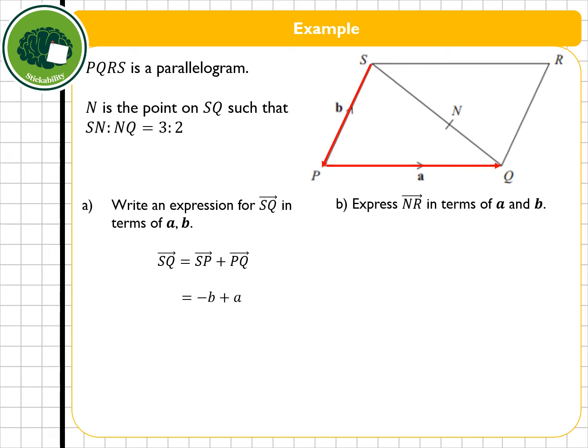Part B, I want to express NR in terms of A and B. Again, similar path. This time SQ is used in part A. So I kind of want to go in that direction. I'm going to keep the direction. I'm going to go from N to Q and then Q to R. Now, we don't have any information about N to Q at all. But we do know from the question that SN to NQ is in the ratio of 3 to 2. Now I could start by writing the 3 and 2, but this only becomes really helpful when I remember that ratios are to do with parts of an amount. And that ratio means I've got 3 fifths here and 2 fifths here. So what I'm saying is I've got 2 fifths of S to Q plus Q to R.